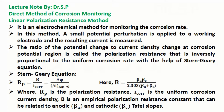Linear polarization resistance method is also one of the direct methods of corrosion monitoring. It is an electrochemical method for monitoring the corrosion rate. In this method, a small potential perturbation is applied to a working electrode and the resulting current is measured. The ratio of the potential change to current density change at the corrosion potential region is called the polarization resistance, which is inversely proportional to the uniform corrosion rate with the help of the Stern-Geary equation.